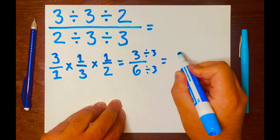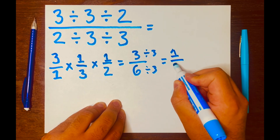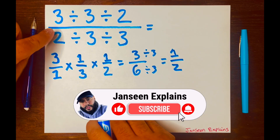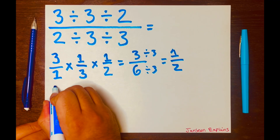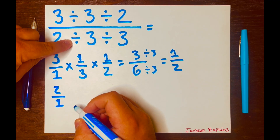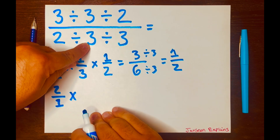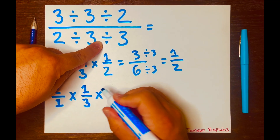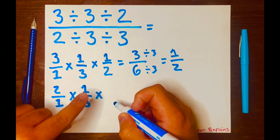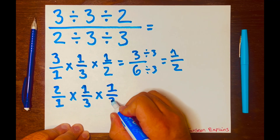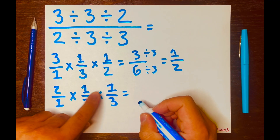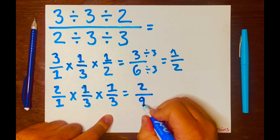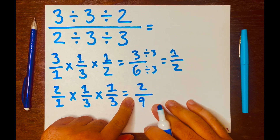Now let's take care of this part: two divided by three, divided by three. Same thing — they'll turn into fractions. So it'll be two over one. Then change the division symbol to multiplication and flip three over one, written as one over three. Then change the next division symbol to multiplication and flip three over one, written as one over three. Multiply across: two times one is two, times one is two, over one times three is three, times three is nine. So we have two over nine, and this cannot be simplified further.